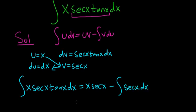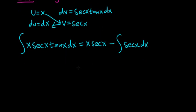And now we can finish. So this is equal to x secant x minus, and this is an integral that is worth memorizing. It's the natural log of the absolute value of secant x